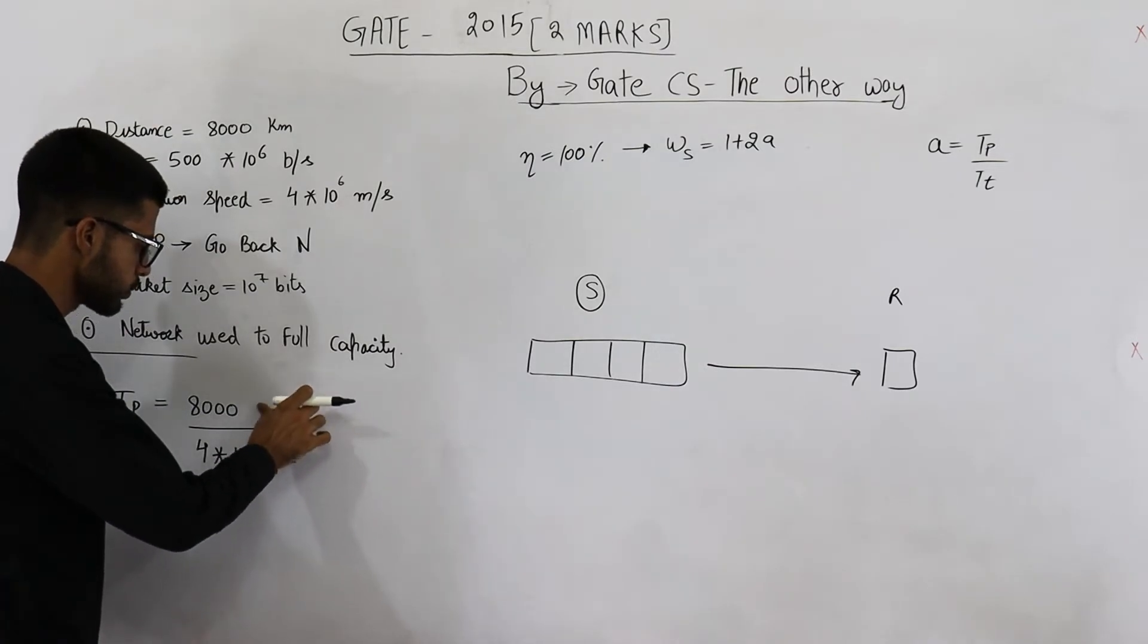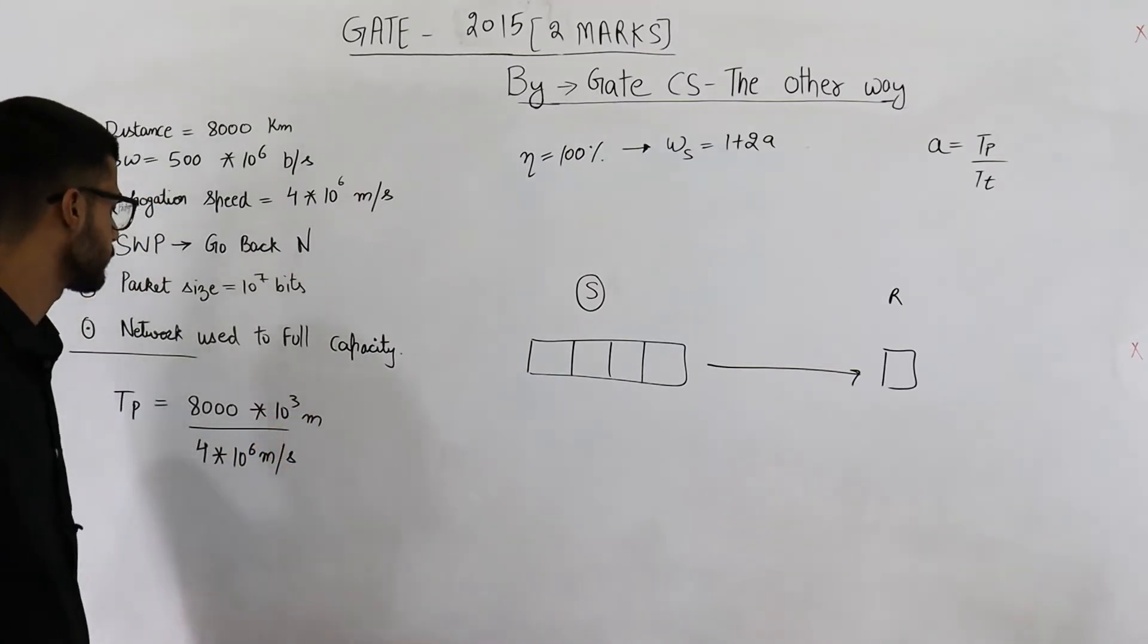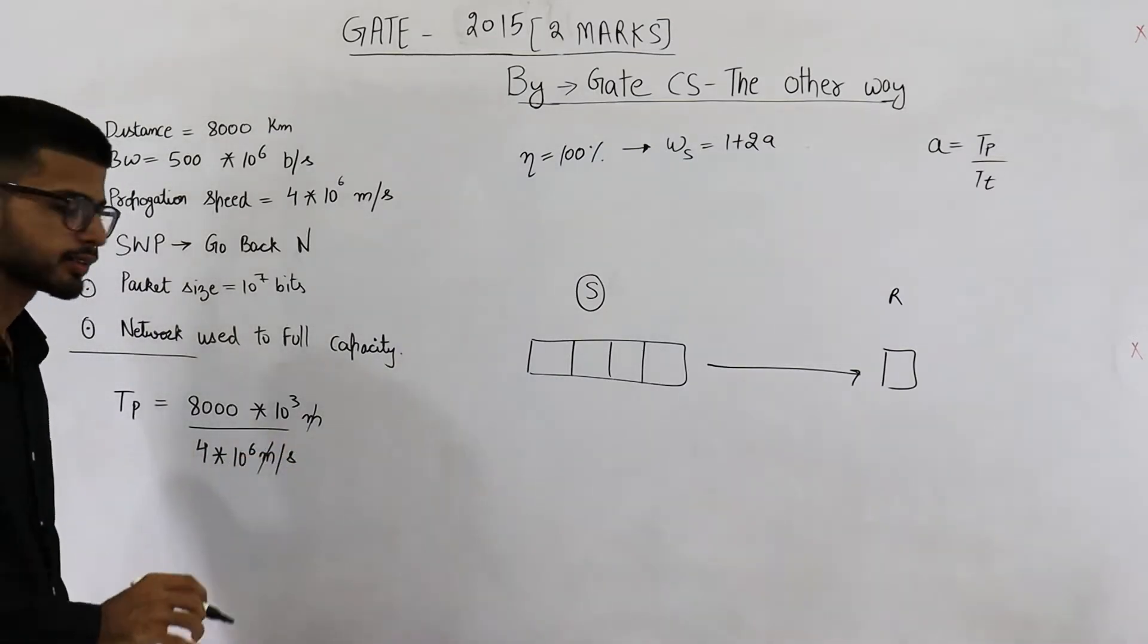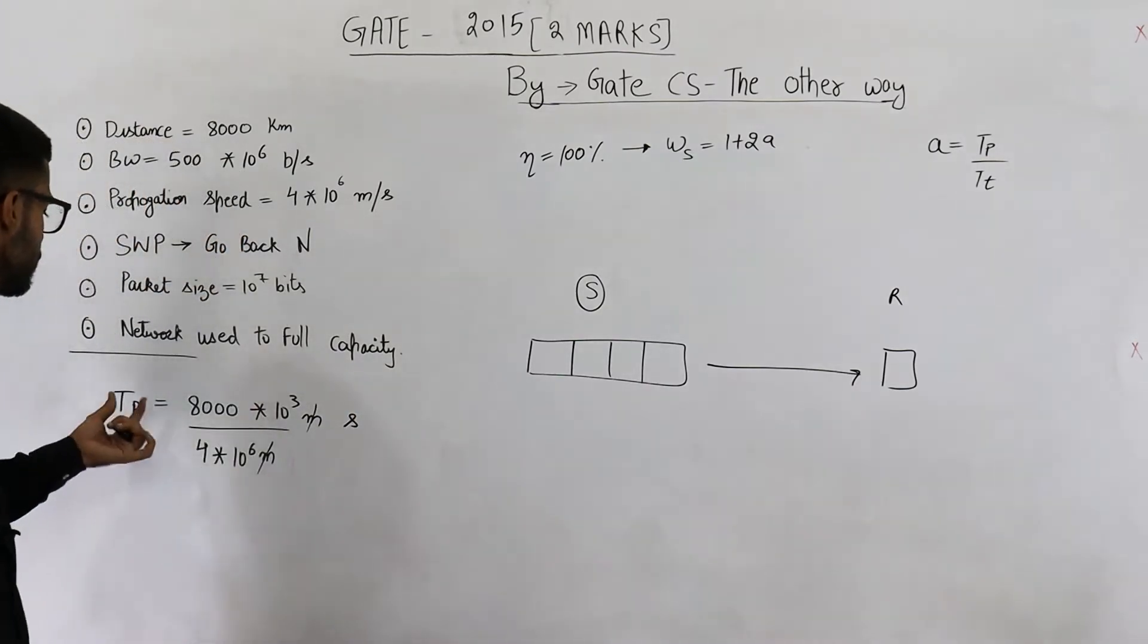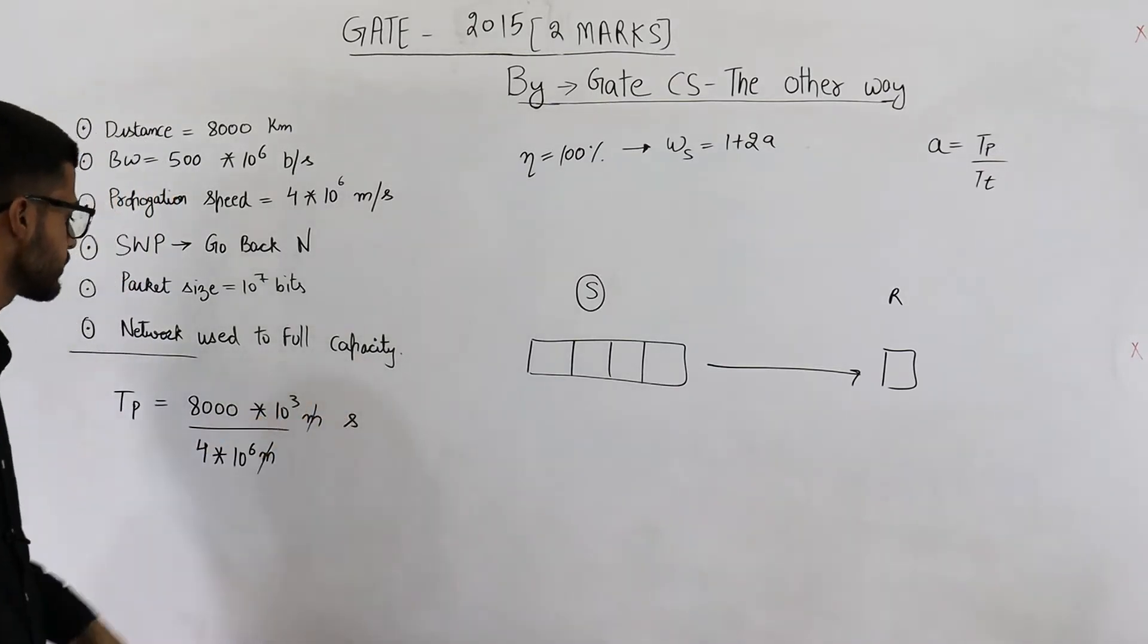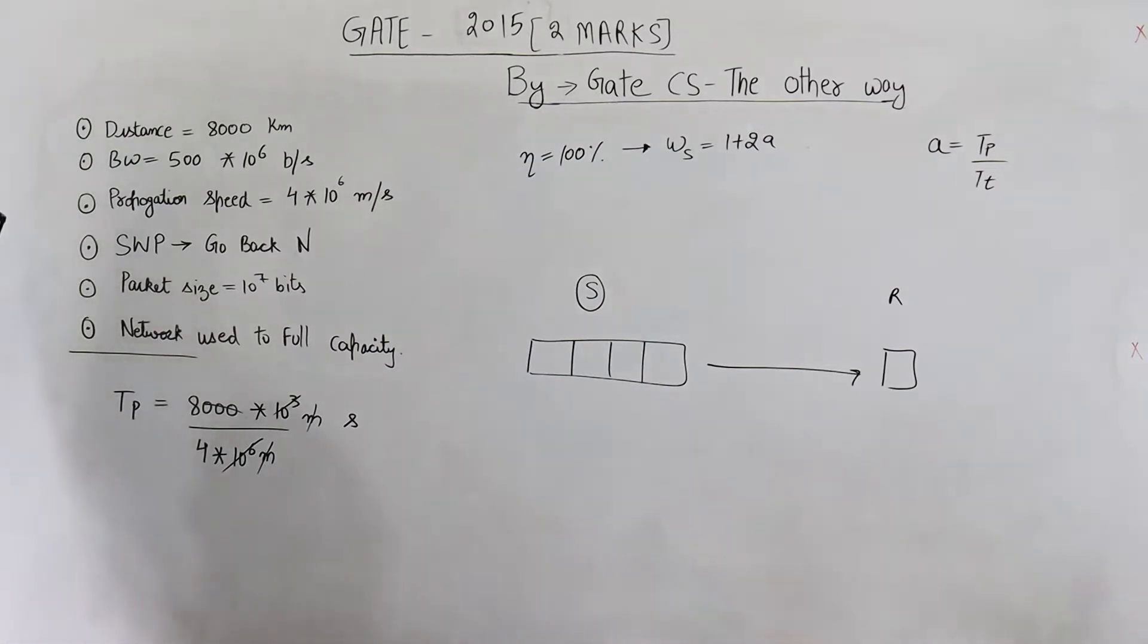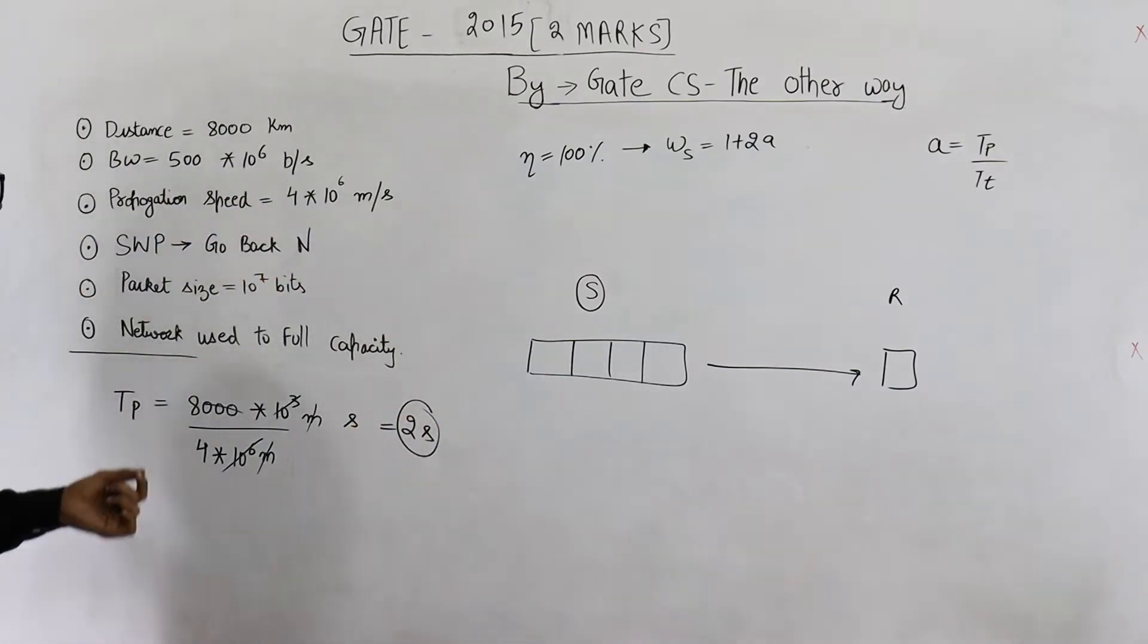Speed is given as 4 × 10^6 meters per second. Unit here is kilometers and this unit is meters. So we need to convert the units. 8000 kilometers means 8000 × 10^3 meters. This meter and meter will get cancelled. Per second can be written as second. You can see propagation time is amount of time and time is measured in seconds. These are three zeros and three zeros here, so 10^6 can be cancelled. It is 8 divided by 4 seconds, that is 2 seconds.